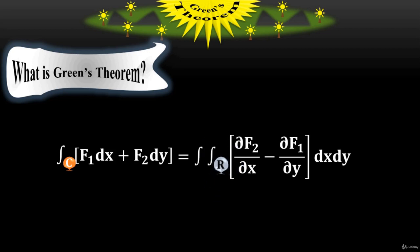On the right side, R stands for the region under that curve, or the surface under that curve.